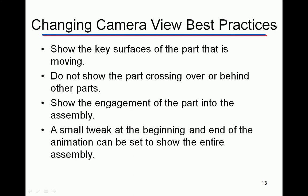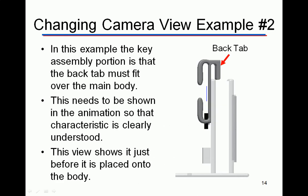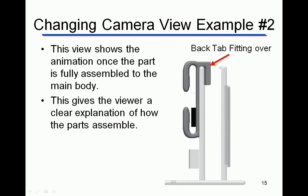Here's another example from the desktop organizer: you can see there's a back tab that, if you left it in isometric view, you wouldn't necessarily be able to see. But that tab needs to fit over this part, so the animation needs to clearly show that. This shows the part just before it's placed onto the body — you can tell the U-shaped piece fits right over this piece, giving a clear explanation of how the parts assemble.